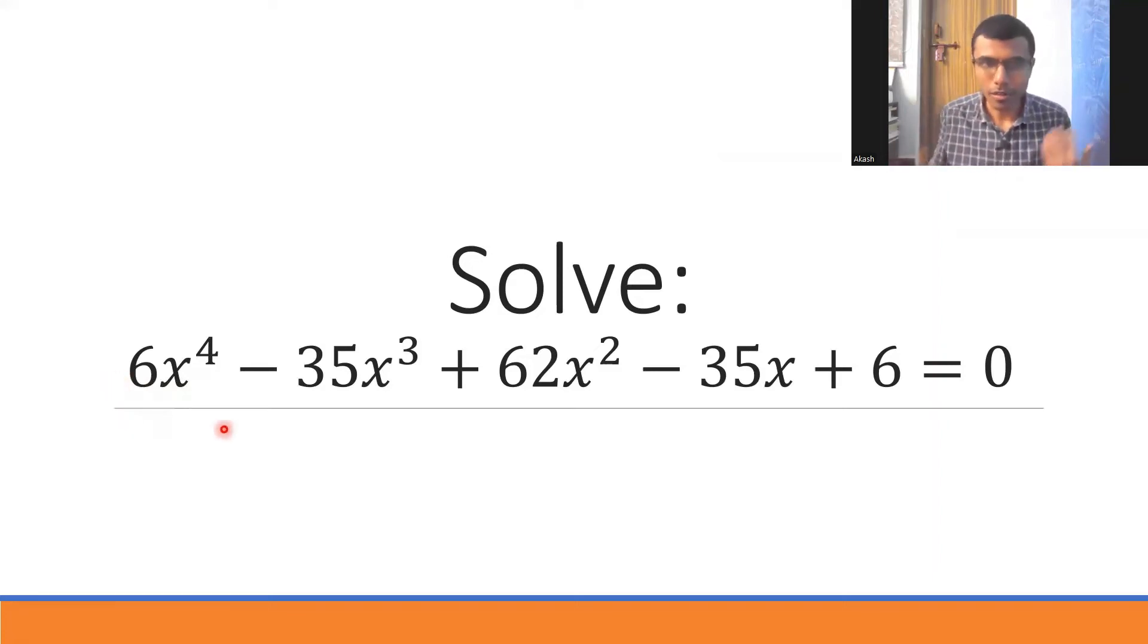Hello learners, let us see how to solve this equation: 6x⁴ - 35x³ + 62x² - 35x + 6 = 0.